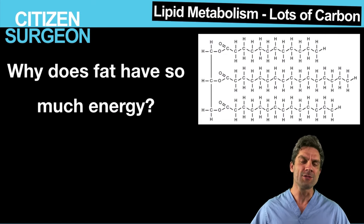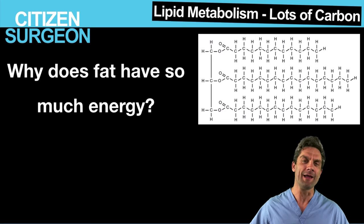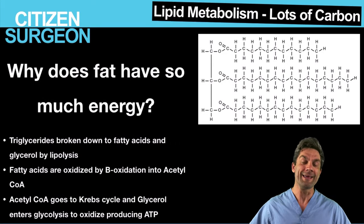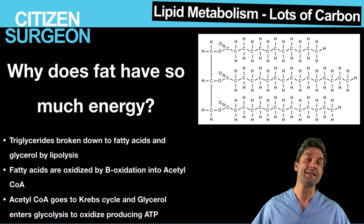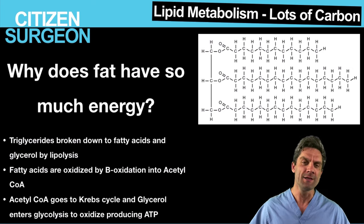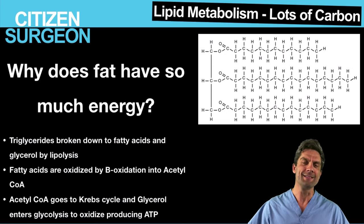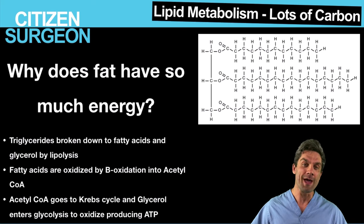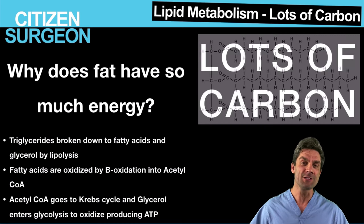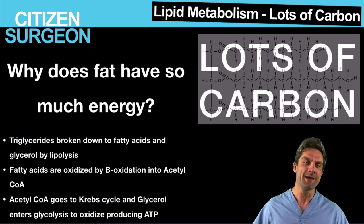Going back to biochemistry — a triglyceride is three fatty acids hooked up to a glycerol, and each of those fatty acids can have more than 16 carbons. For example, linolenic acid is an 18-carbon chain. Those triglycerides, when broken down for energy, are broken down in the cytoplasm into their fatty acids and glycerol. The fatty acids go through the carnitine shuttle to get into the mitochondria, where fatty acid oxidation occurs, creating acetyl-CoA, which goes into the Krebs cycle and produces ATP. The glycerol directly enters glycolysis — so that's a lot of ATP production per triglyceride. This gives you the understanding of why fat is such an important resource in trauma and injury.